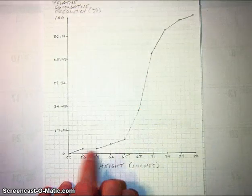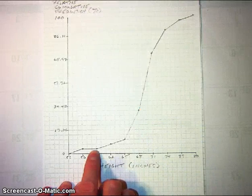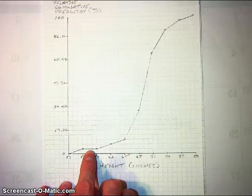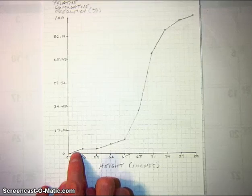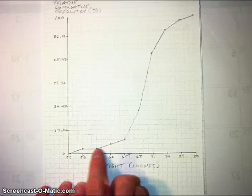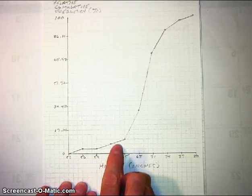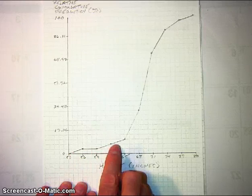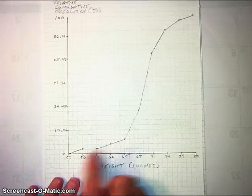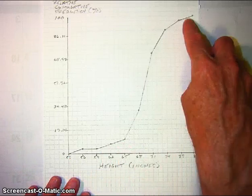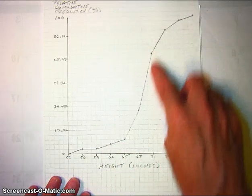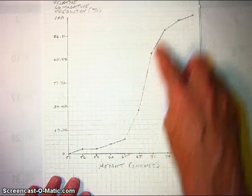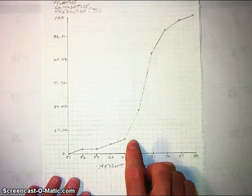Over here where the histogram had no observations at all — no bar in that interval — the ogive is flat. In these other intervals, the ogive is fairly flat but rising, and those were the intervals on the histogram where the bars were short, only one unit high. In the middle where the histogram was tallest, that's where the ogive is steepest.